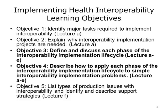This unit will cover the following learning objectives. Number one, identify major tasks required to implement interoperability. Number two, explain why interoperability implementation projects are needed. Number three, define and discuss each phase of the interoperability implementation life cycle. Number four, describe how to apply each phase of the interoperability implementation life cycle to simple interoperability implementation problems. And number five, list types of production issues with interoperability and identify and describe support strategies.